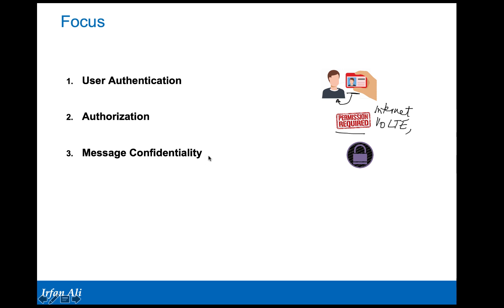Confidentiality typically means being able to encrypt — or cipher — the messages. The messages are encrypted in such a way that if there is an adversary listening on the air, it is not able to find out what these messages are or to gain further information from them.